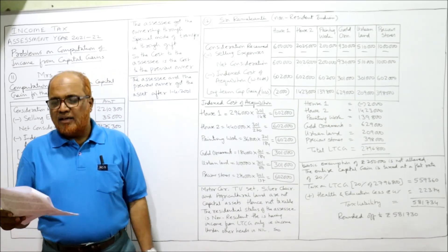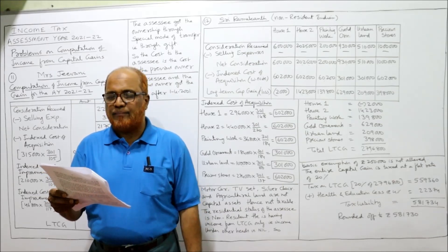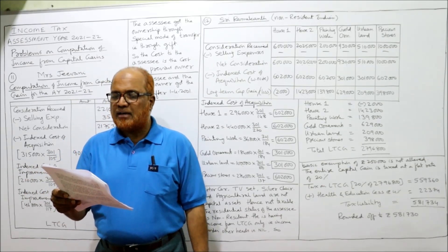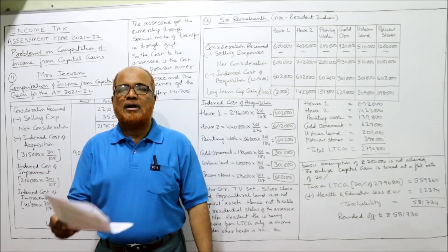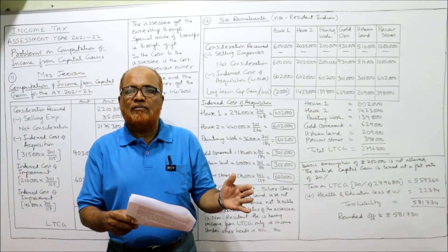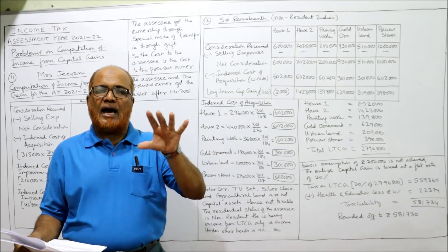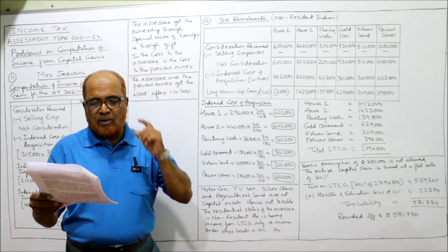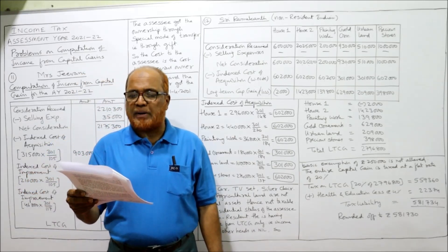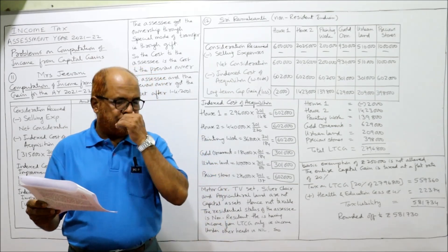Now the 12th problem: Sri Ramakant, a non-resident Indian, is leaving to America to settle there permanently. He sold the following assets in India during the previous year relevant to the current assessment year. Calculate the capital gain income and tax liability if income under other heads is nil. The assessee is a non-resident Indian leaving for America, so before leaving he has disposed of all his assets.